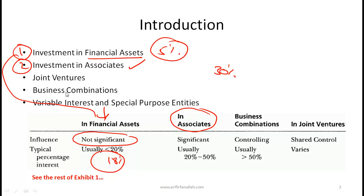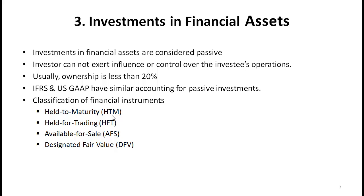A third category is a joint venture, where you create a joint venture with another entity. Fourth is a business combination, effectively a merger. Finally, there are variable interest entities and special purpose entities. These are the types of intercorporate investments we will cover in this lecture and possibly the next.